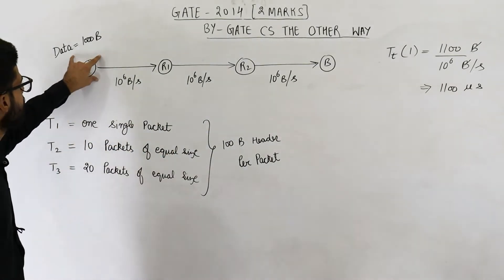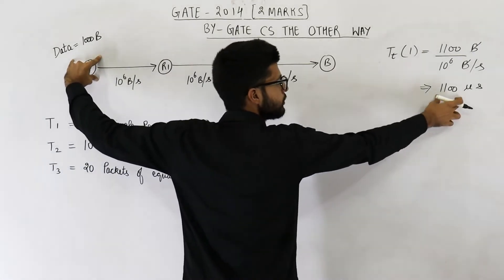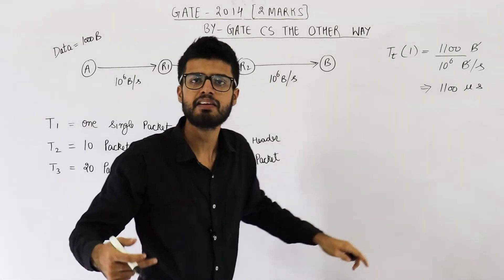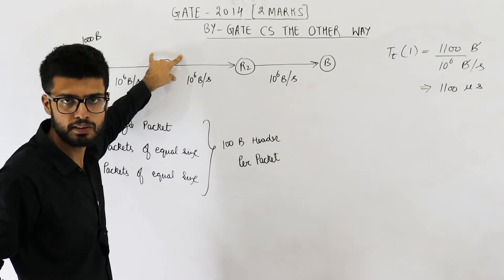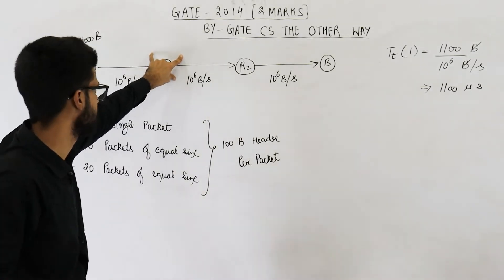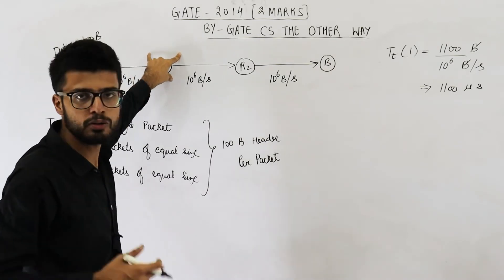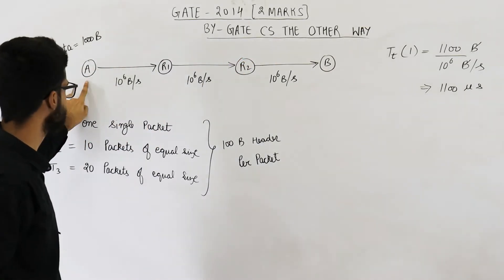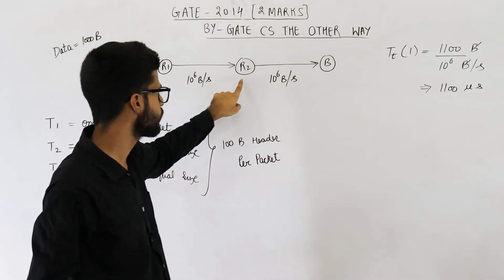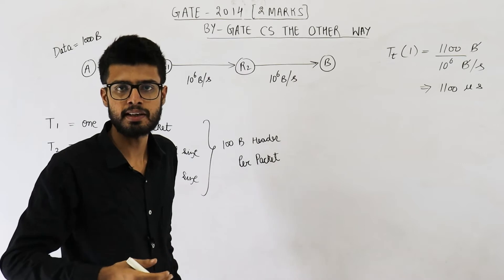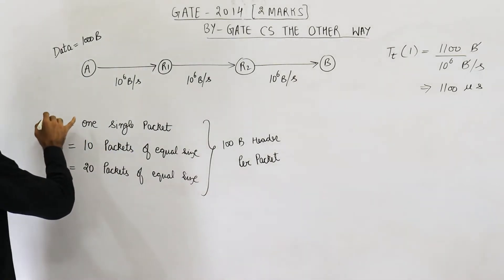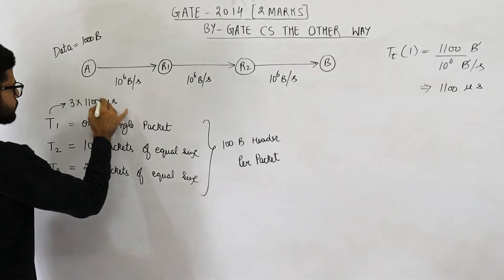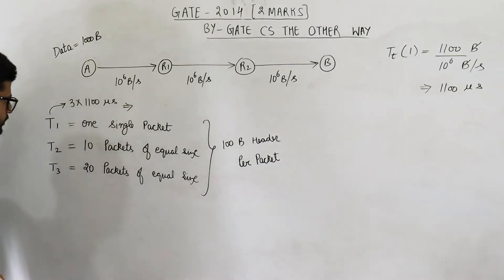A will transmit this packet in 1100 microseconds. Immediately R1 will receive it, then R1 will also take 1100 microseconds to transmit it, and R2 will also take 1100 microseconds. So there are three transmission delays in total. The value of T1 is 3 × 1100 = 3300 microseconds.